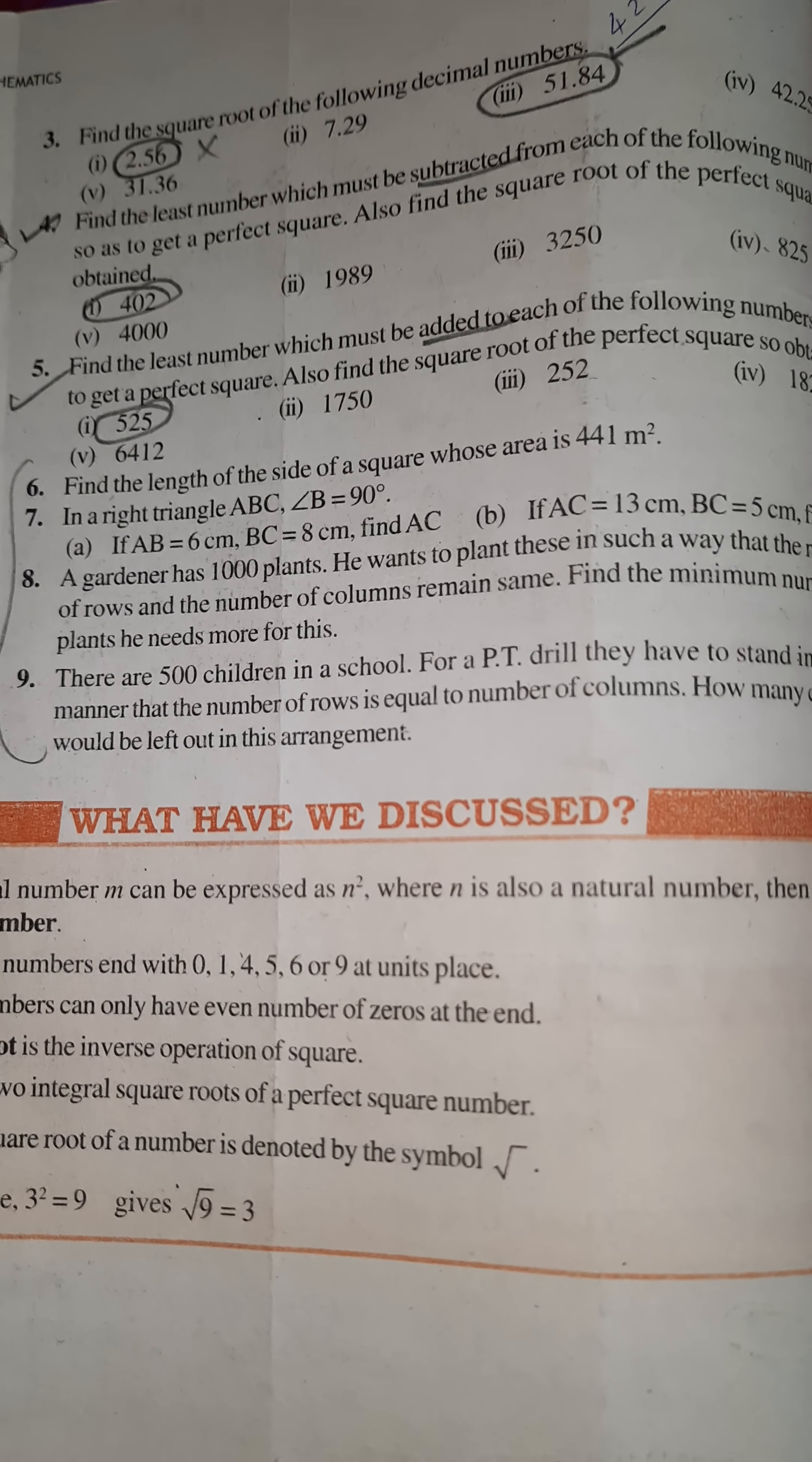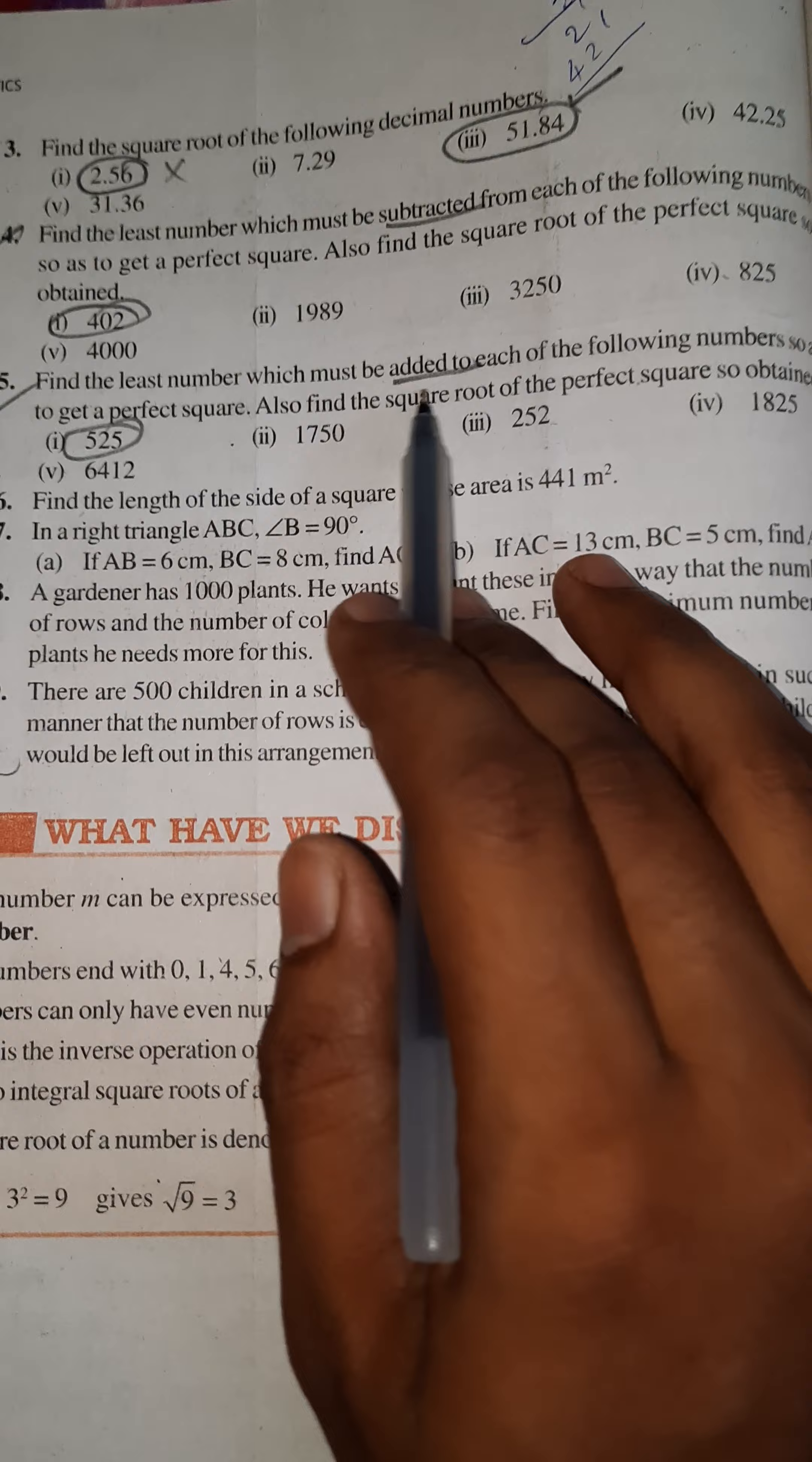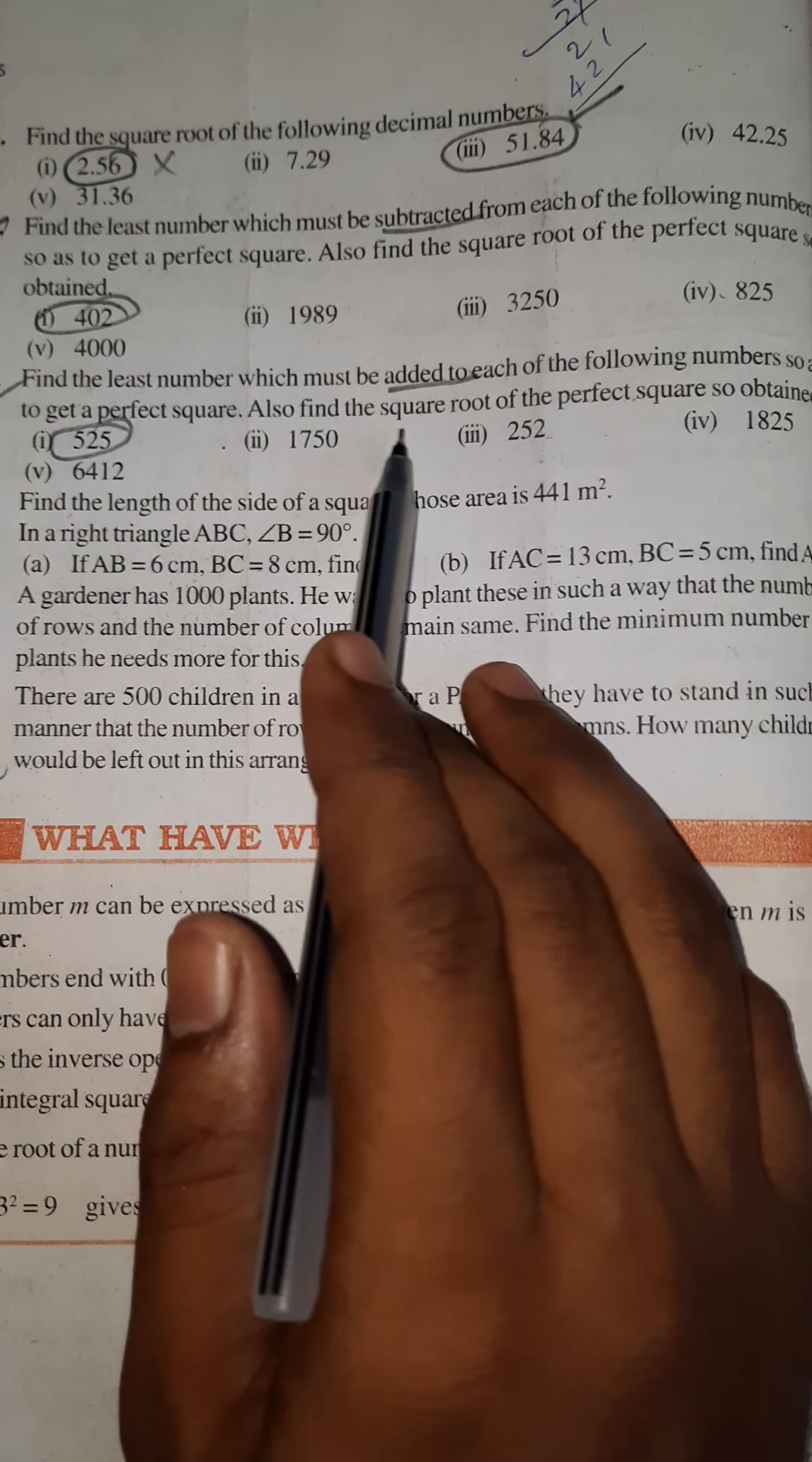Good morning dear students. On page number 108, continue exercise 6.4, question number 5. Find the least number which must be added. This is the opposite of the fourth question. To each of the following numbers so as to get a perfect square, find the square root of the perfect square so obtained.